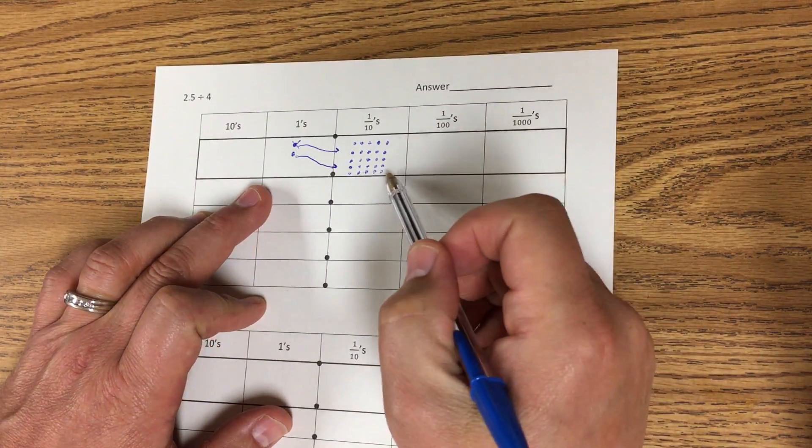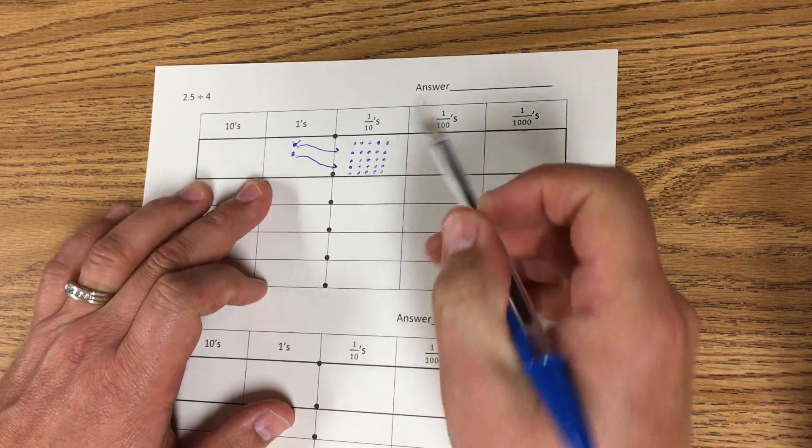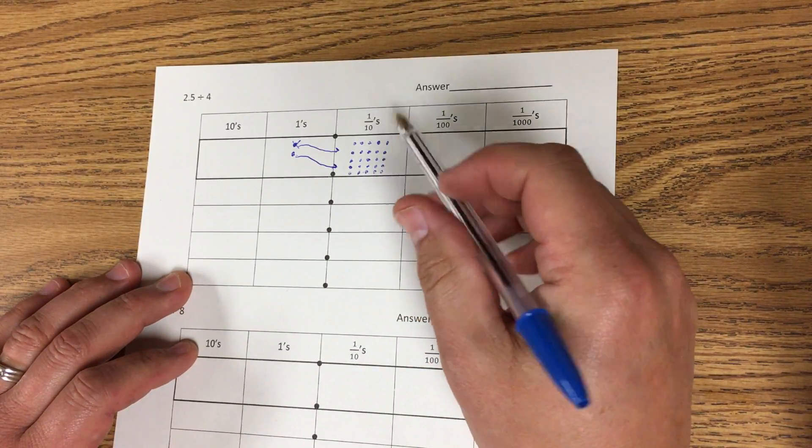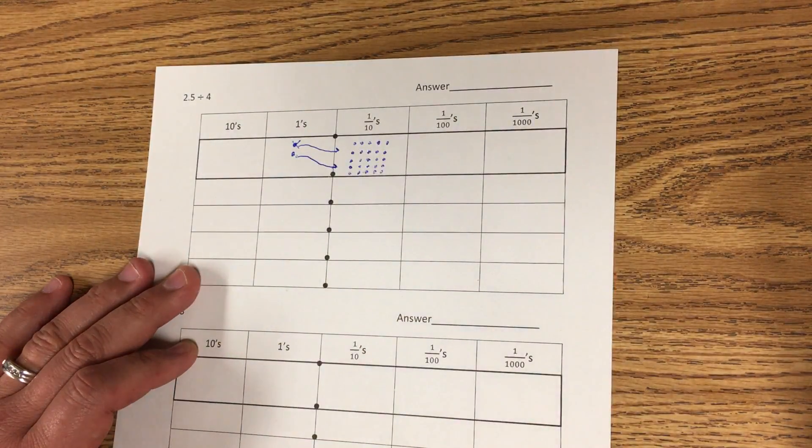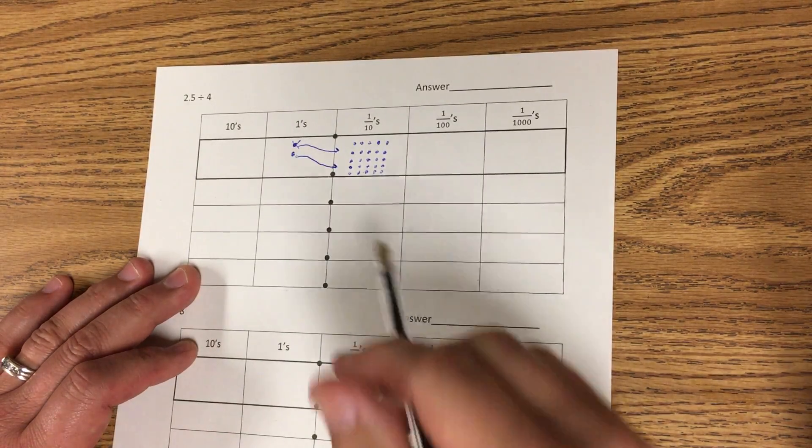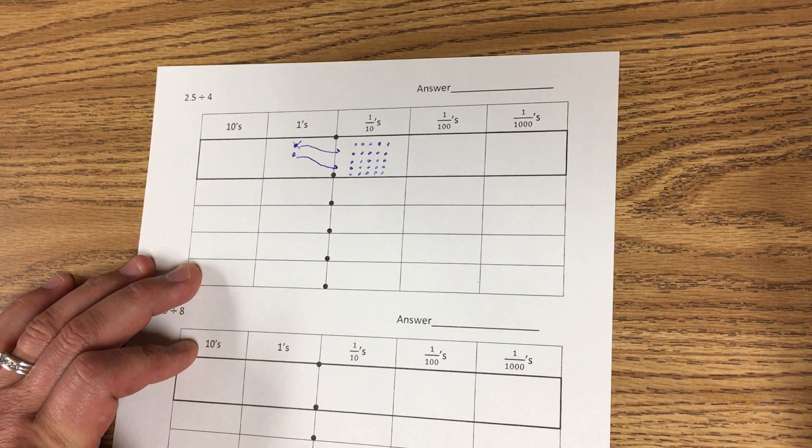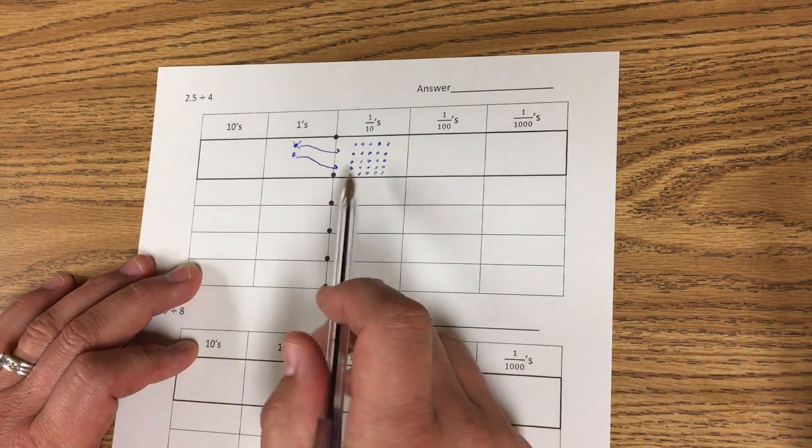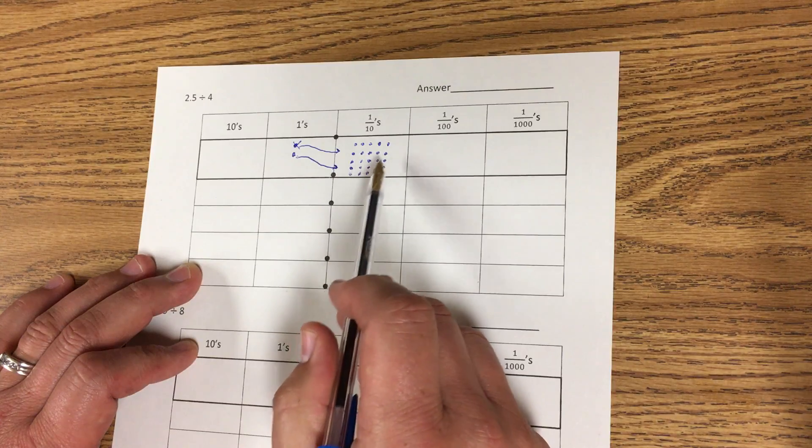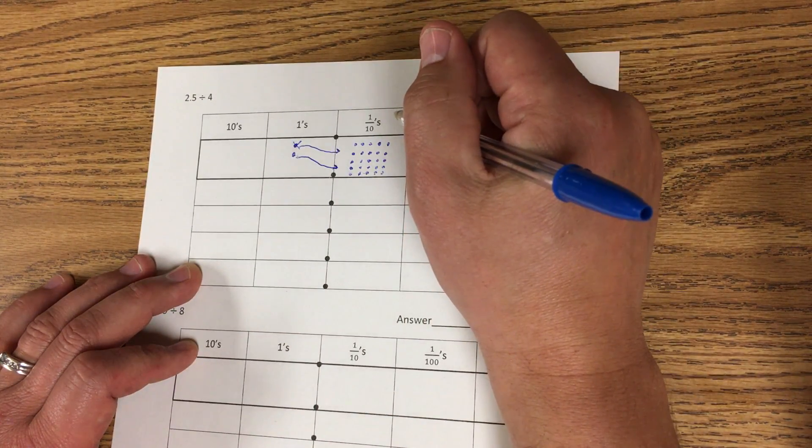Now I have 25 tenths and now I'm gonna take as many as I can out of 25 tenths and spread them out evenly into these 4 rows. So I'm thinking what's the largest amount out of 25 that I can divide by 4 and that would be 24. So 24 divided by 4 is 6. So I can take 6 of these dots and place 6 in each one of these.